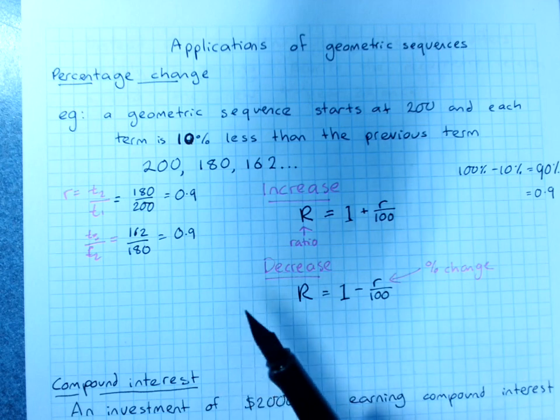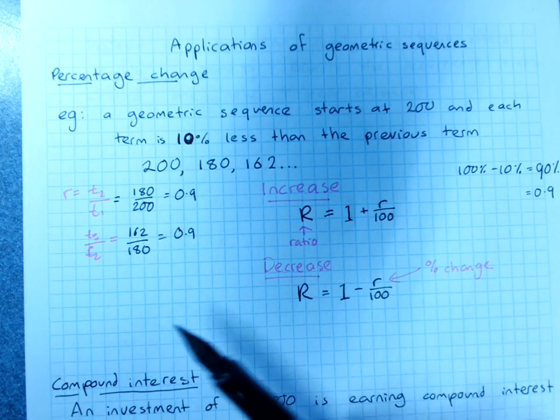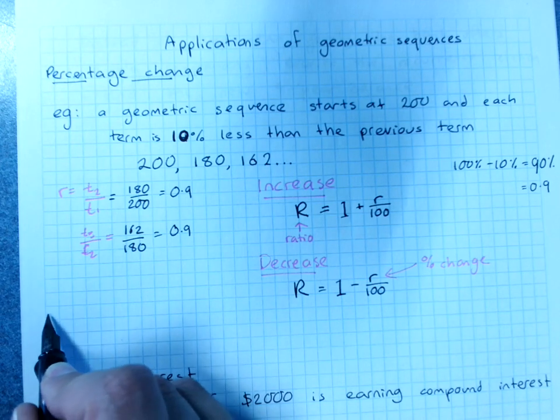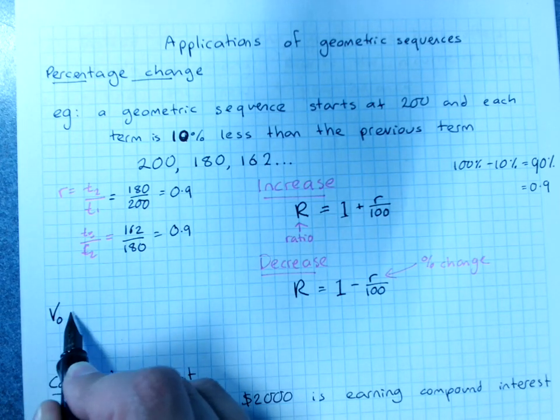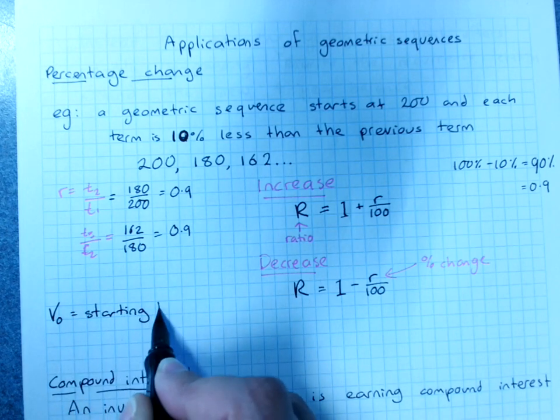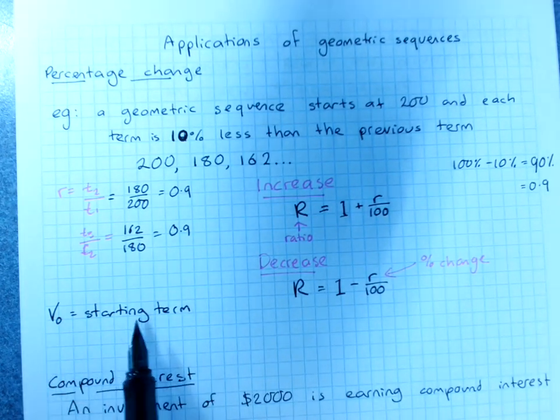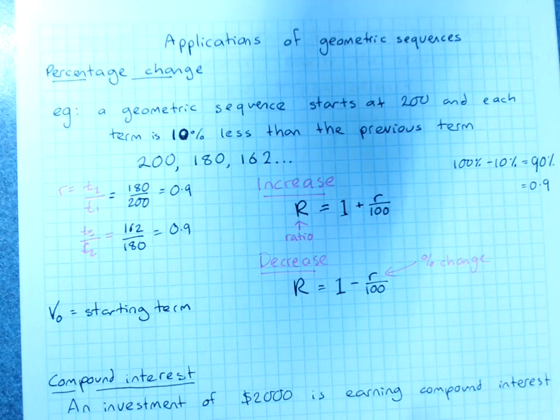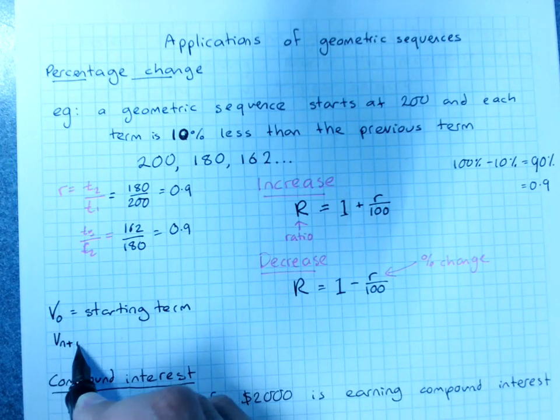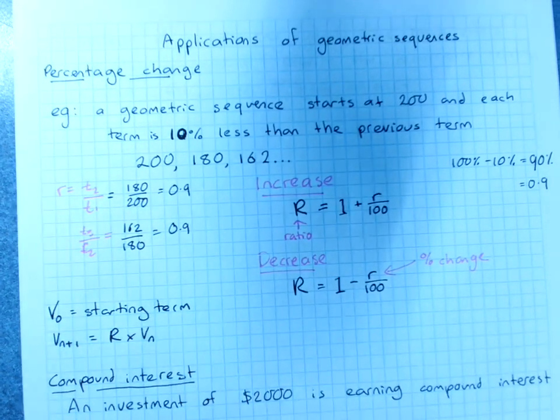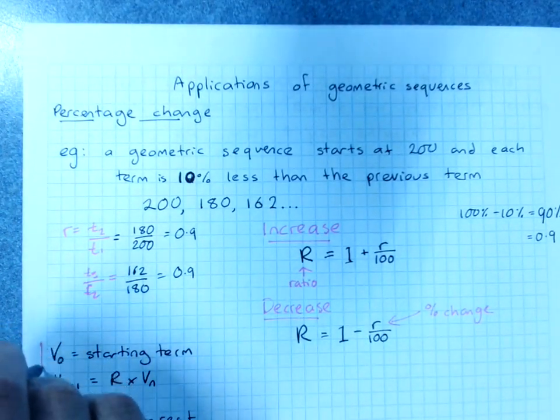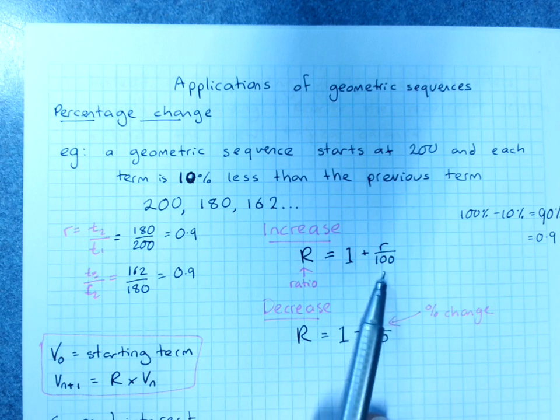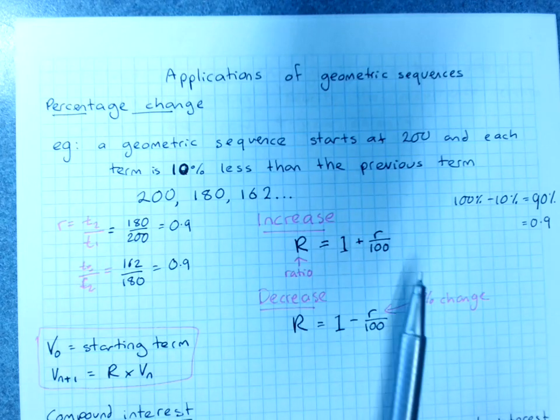And just like we've been doing over and over again, our pattern can simply be that V0 is the starting term, and each term can be the common ratio multiplied by the previous term. So there's a bunch of information in there, but none of it should be new to us. We should have done this part when we did compound interest last year. And this is just reducing by a percentage instead of increasing.